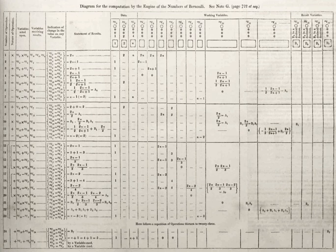In mathematics and computer science, an algorithm is a set of instructions, typically to solve a class of problems or perform a computation. Algorithms are unambiguous specifications for performing calculation, data processing, automated reasoning, and other tasks.